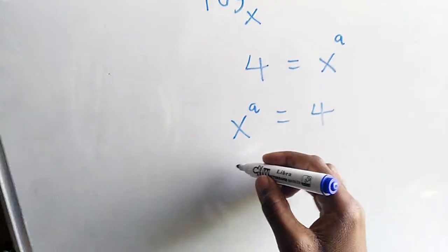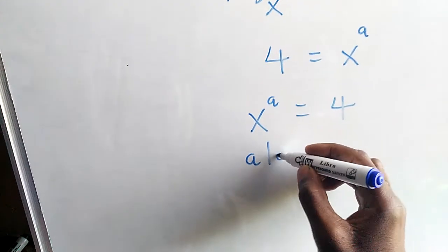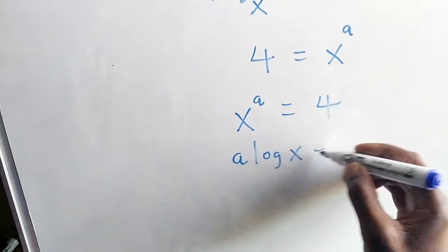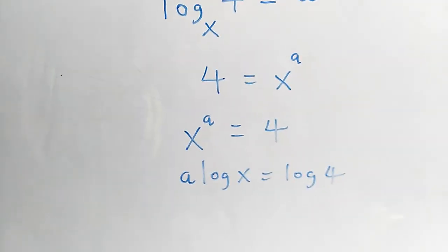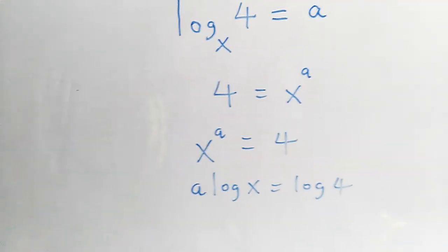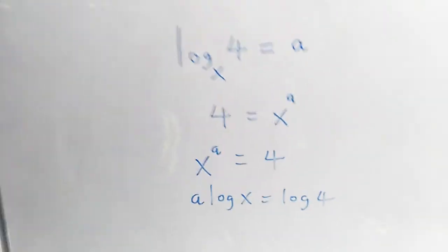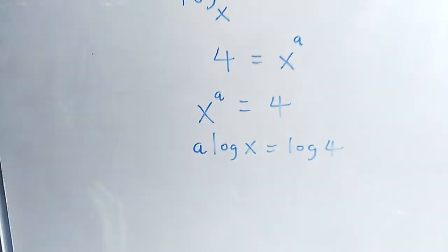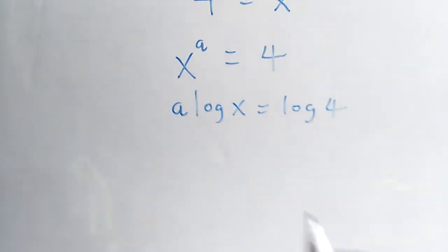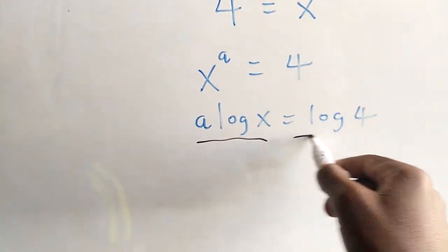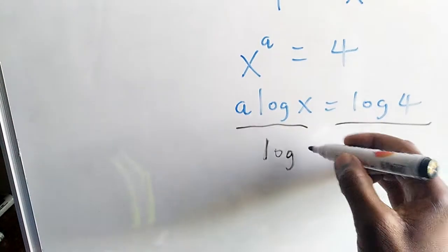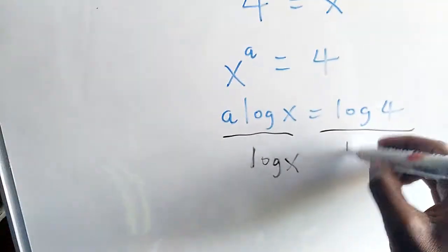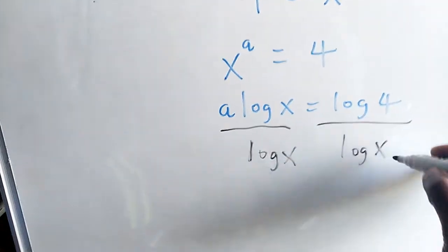Introduce the log on both sides, we'll drop the power. We'll now say we have log of that. Divide through by log x.